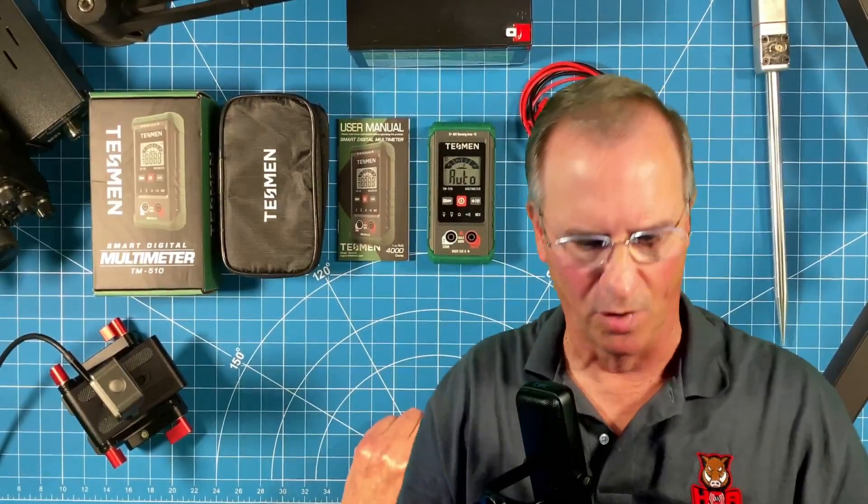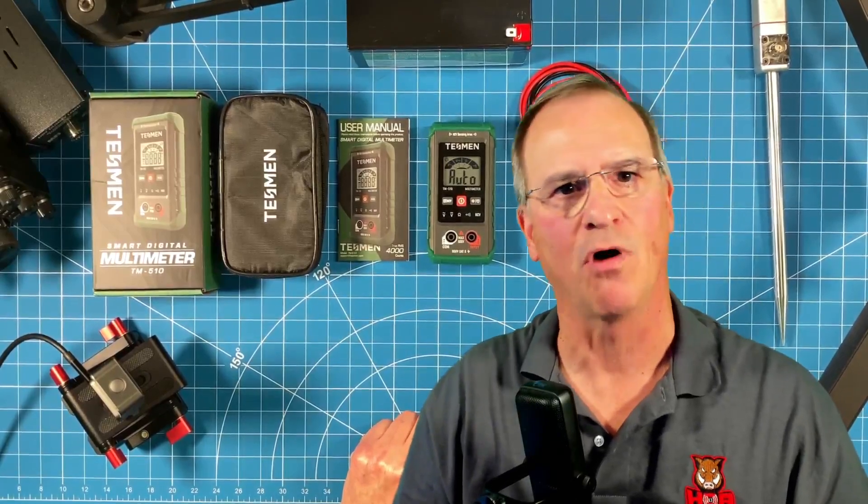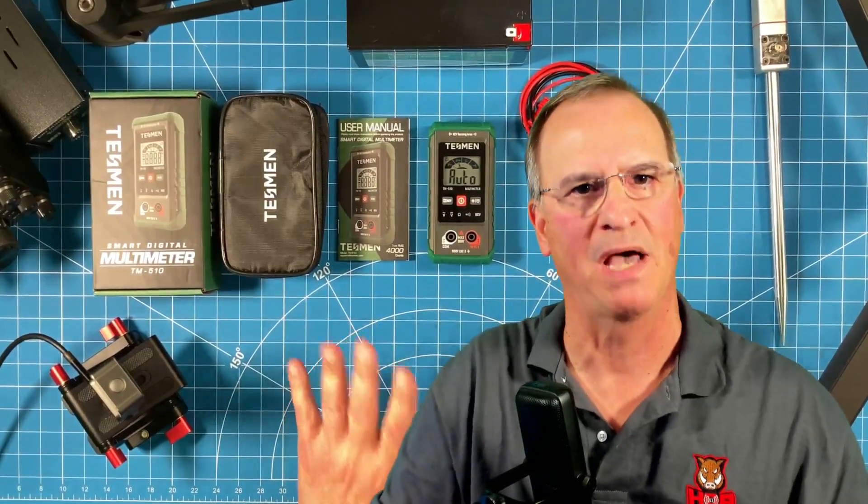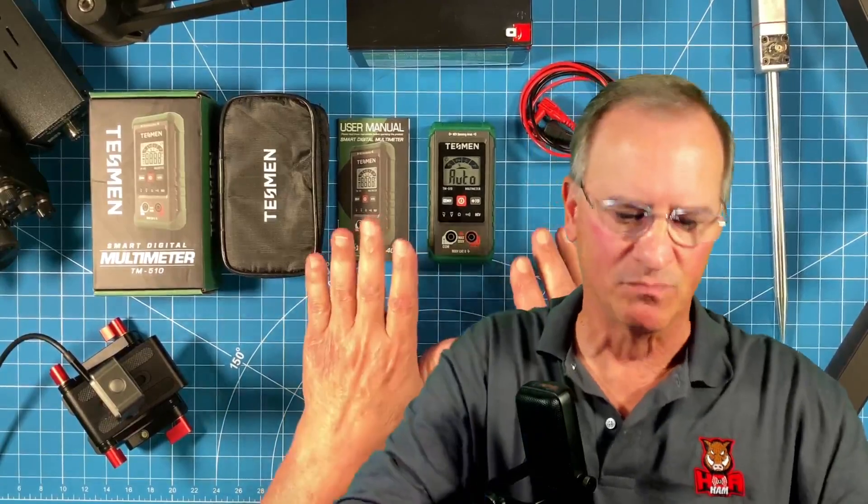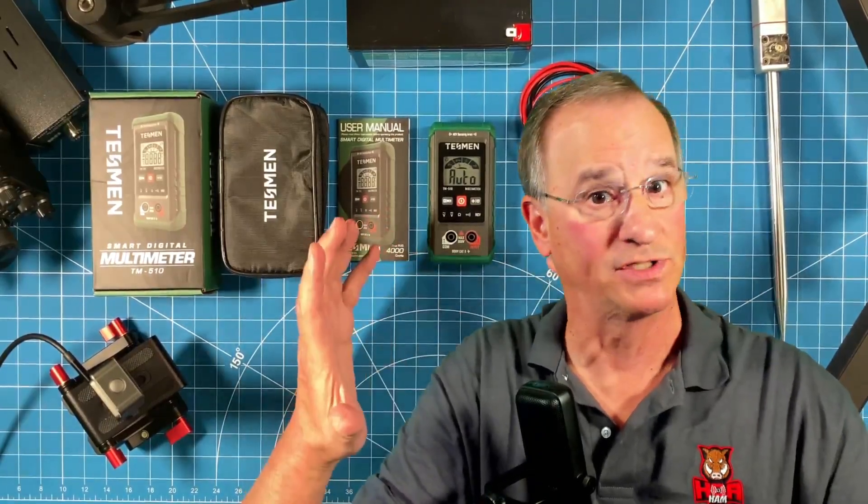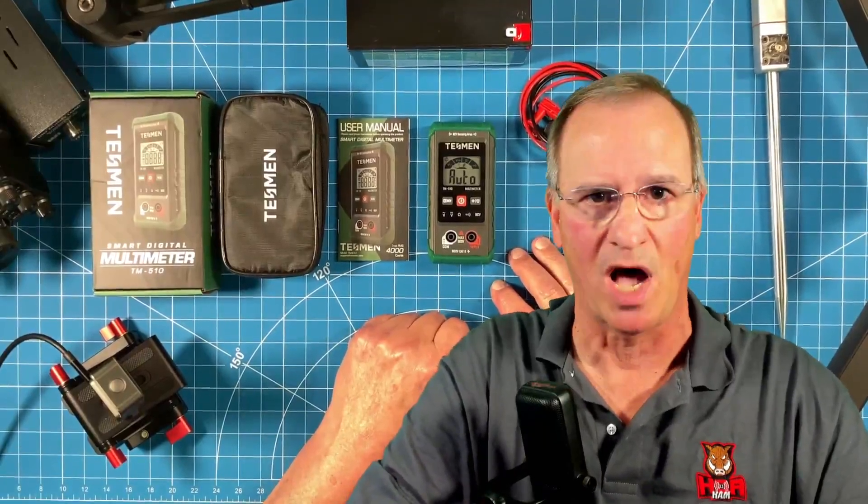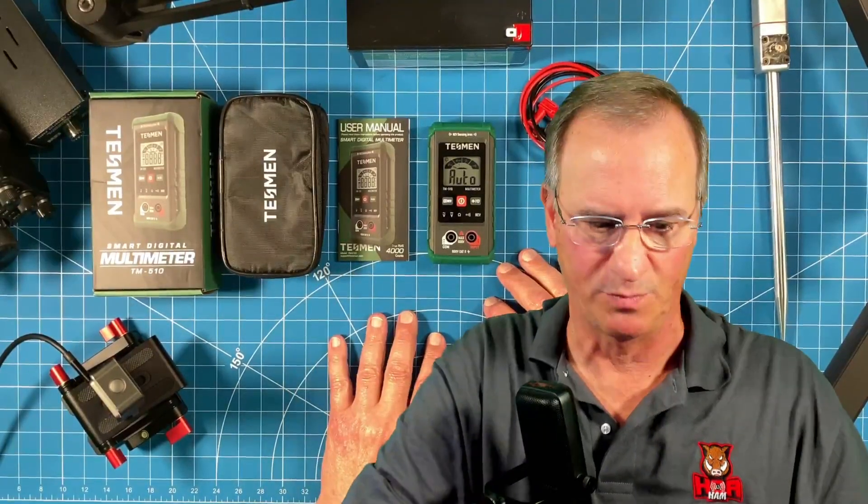So would HOA Ham buy the Tessman multimeter? Well, many companies when they're trying to break into a market either offer compelling features or compelling price point. This multimeter is not going to set the world on fire for features. It offers the basic features. But if basic features are all you need, then it's the price point. And for sub $10, it's a pretty good price point.